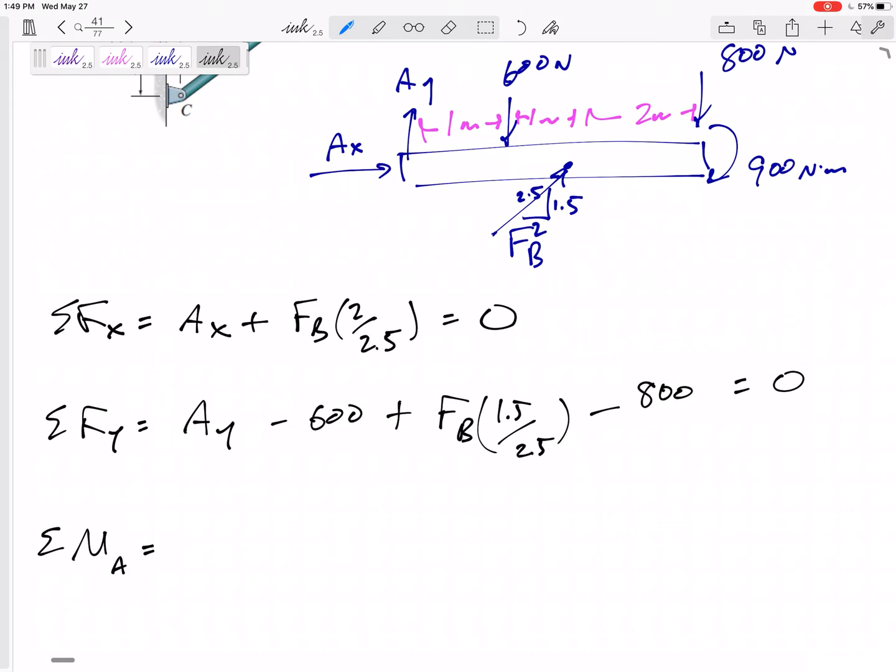I probably should have just started with summing the moments about A. Sum of the moments about A. AX goes straight through it. AY goes straight through it. 600 is acting 1 away, creating a negative moment. The FB, the 1.5 over 2.5 component, right, would be that one. It is acting 2 meters away, creating a positive moment. I don't worry about that one because it looks like it would be acting through the middle. Now be careful.